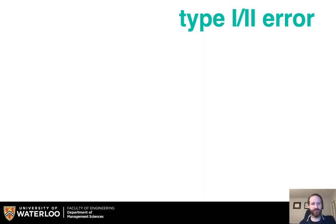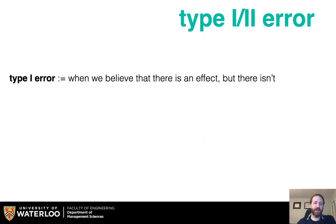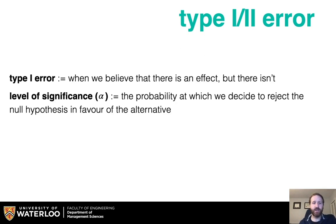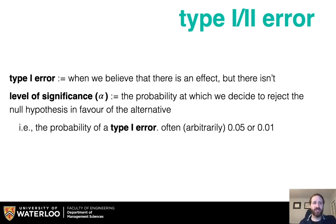Let's talk about error. A type 1 error is when we believe there is an effect but there isn't. The level of significance, denoted as alpha, is the probability at which we decide to reject the null hypothesis in favor of the alternative. The probability of a type 1 error equals the level of significance — it's often arbitrarily 5% or 1%, i.e., 0.05 or 0.01.